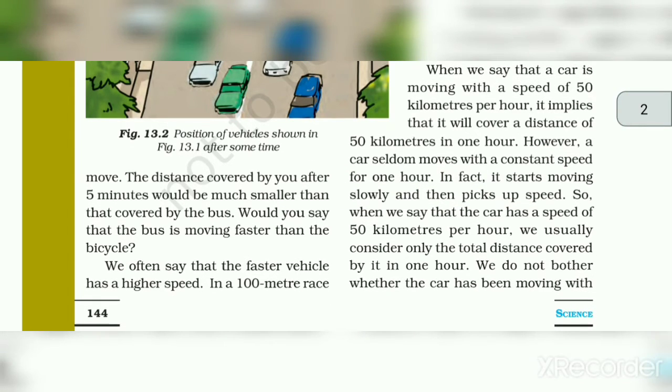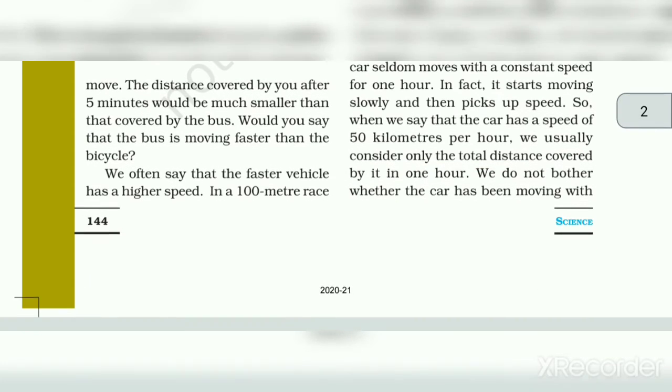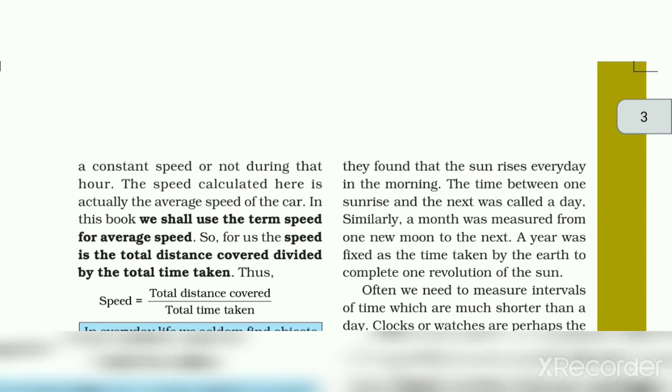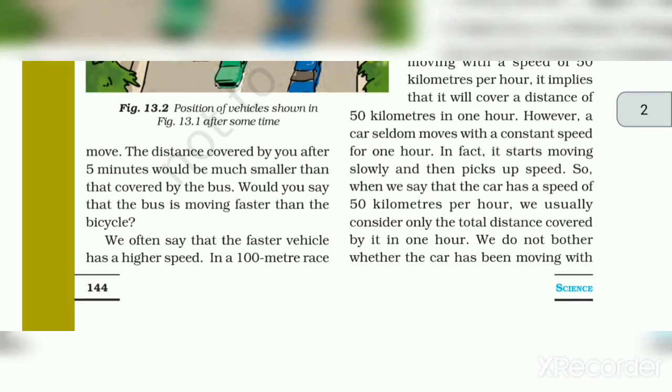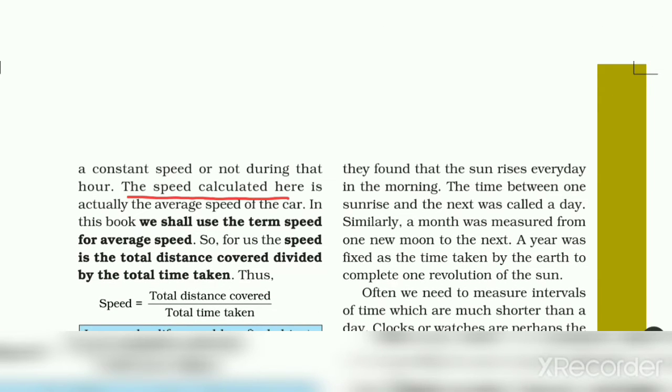So when we say that the car has a speed of 50 km per hour, we usually consider only the total distance covered by it in one hour. We do not consider whether the car has been moving with constant speed or not during that hour. The speed calculated here is actually the average speed of the car.